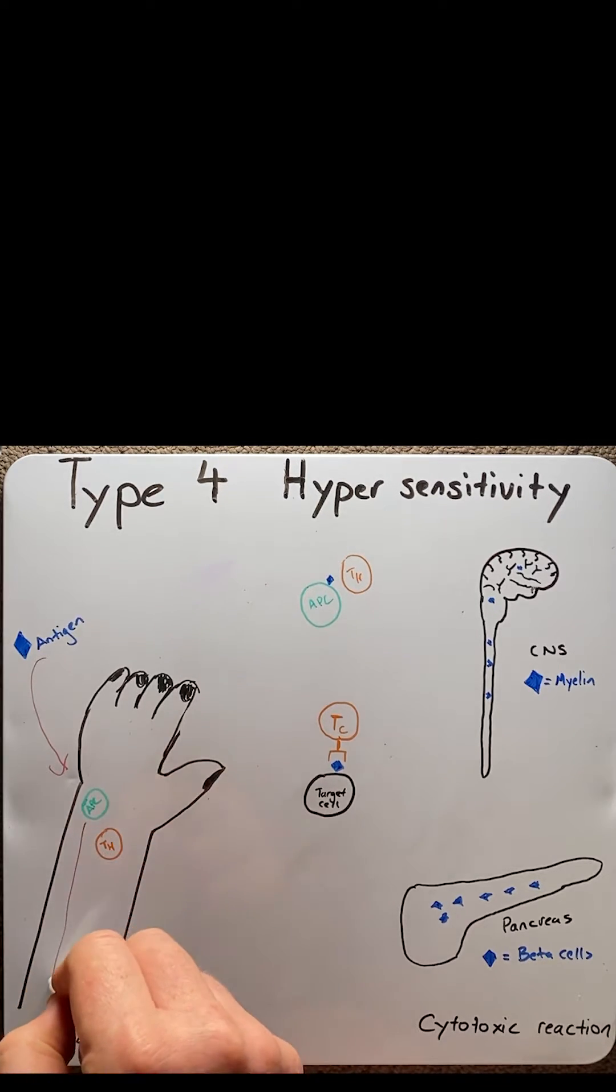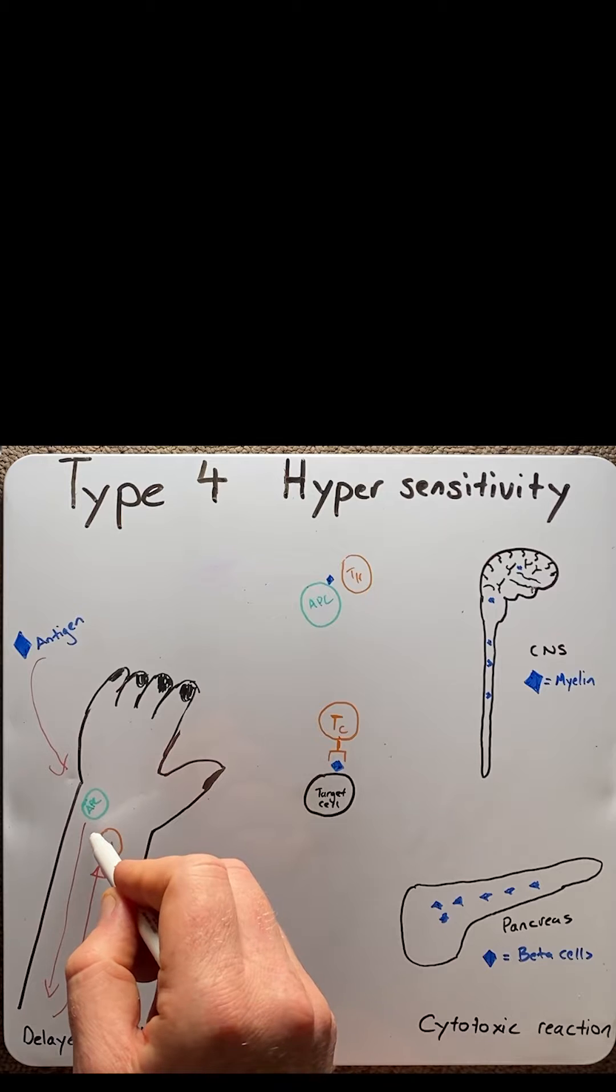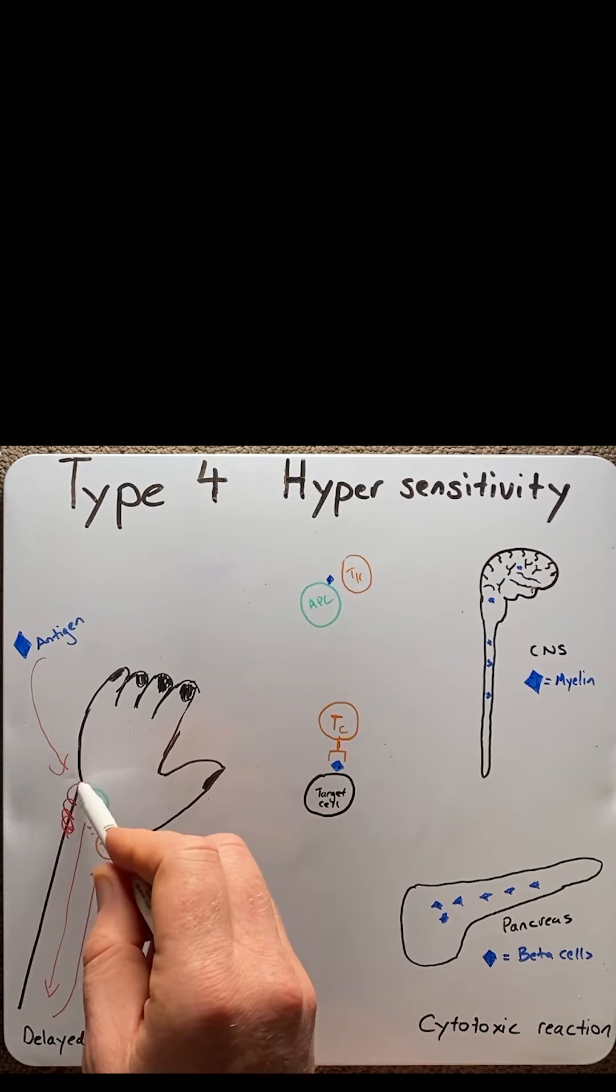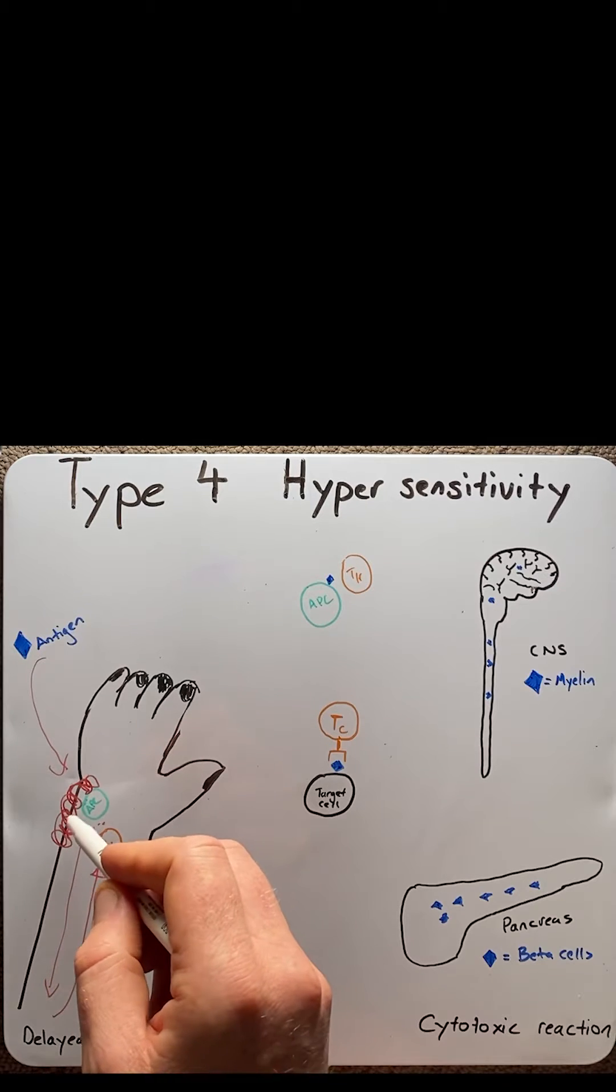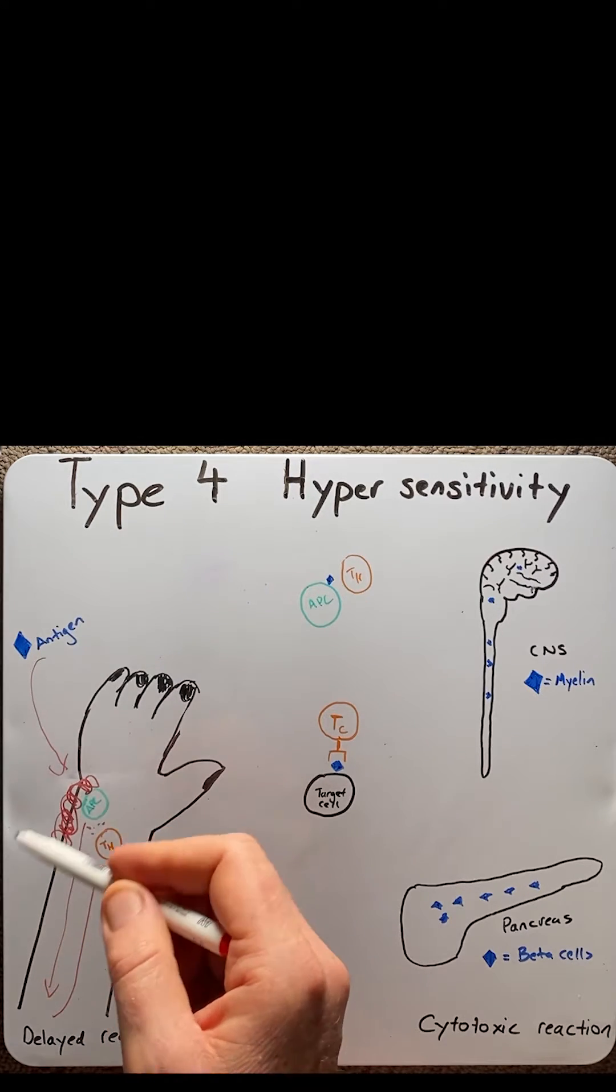Here, it then takes it back to a neighboring lymph node, which then sensitizes and activates a T-helper cell, which then comes to the site. On further exposure, the T-helper cell releases a whole lot of cytokines, which then induces inflammation in the area. This inflammation then leads to dermatitis, rashes, itchiness, etc.